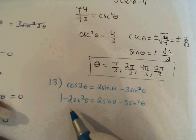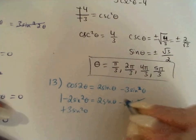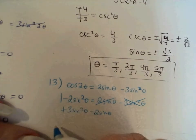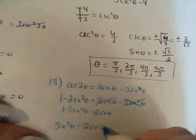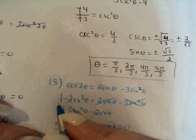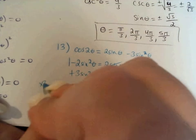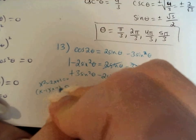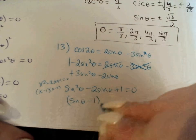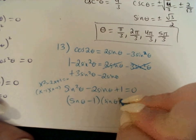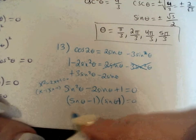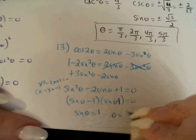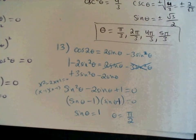I want to get everything on the same side with the quadratic positive. I add 3 sine squared and subtract 2 sine: negative 2 plus 3 is 1, giving sine squared minus 2 sine plus 1 equals 0. That factors as sine theta minus 1, times sine theta minus 1. So I'm solving when sine theta minus 1 equals 0, or when sine theta equals 1. Sine equals 1 when theta equals π/2.